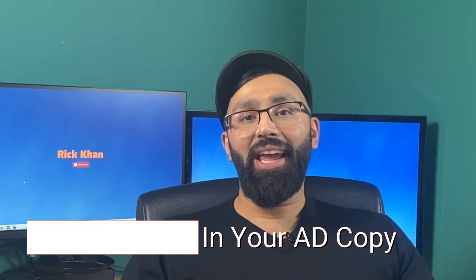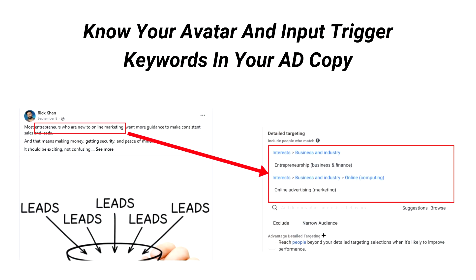The way Facebook machine learning works today is that it focuses more on your copy and creative, and it uses the keywords from your copy to match it with the audience that resonates with your message. So basically, you use broad targeted keywords as inputs for Facebook to pick up. When you do this, Facebook's algorithm can get to work to find the best audience for your ad.